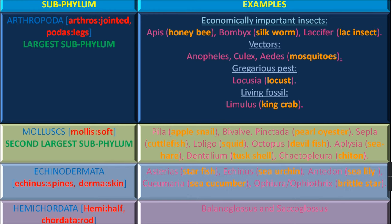Sub-phylum Arthropoda — the word Arthros means Jointed and Podos means Appendages, that is hands or legs. The animals of this sub-phylum have jointed appendages. This is one of the largest phylums found on Earth and the animals of this phylum are omnipresent — they are present everywhere. The economically important insects are Apis (honeybee), Bombyx (silkworm), and Laccifer (lac insect).